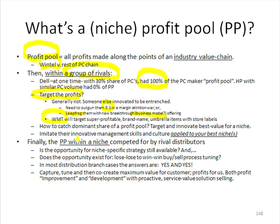What we're doing is saying the profit pool isn't being supplied to an industry value chain. We're looking at niches within the industry. If we're looking at a niche within a local geographic market for a given branch and how rival distributors are doing in that niche, we're really doing it in the most narrow sense. The opportunity for a niche-specific strategy is still available 99% of the time, because most distributors are still pushing any product to anybody to get volume, focused on financial numbers as opposed to service value math going after a particular niche.